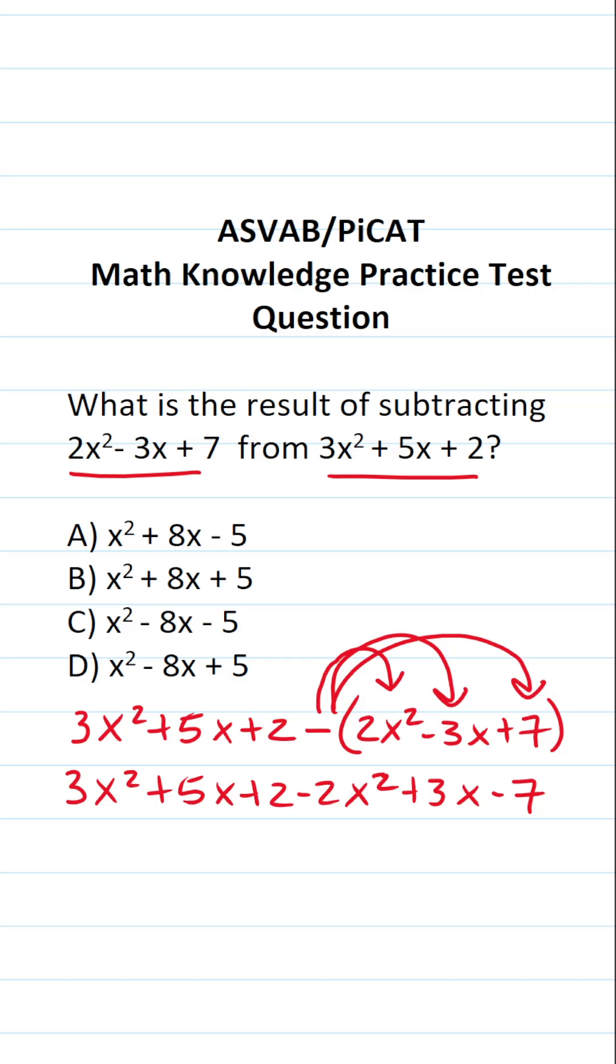All right, so now to get our answer, we have to simplify this expression by combining like terms. We have 3x² and negative 2x². 3x² minus 2x² is just going to leave us with x². We can cross these out.